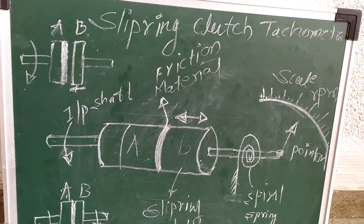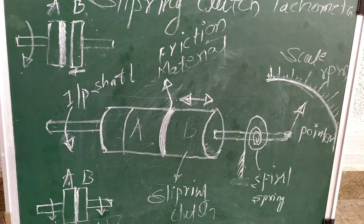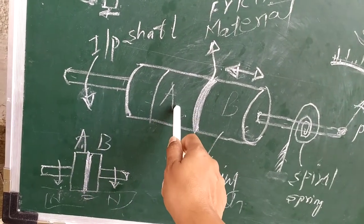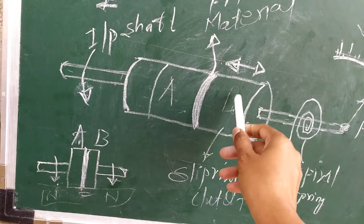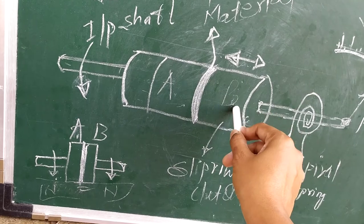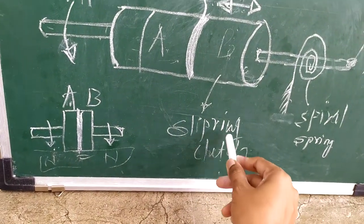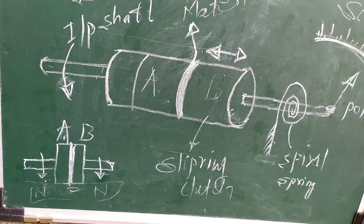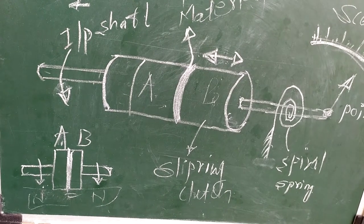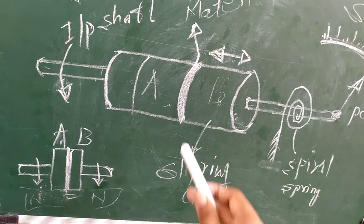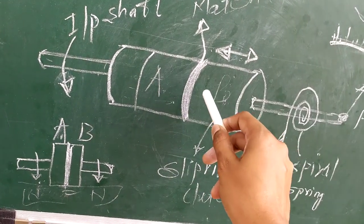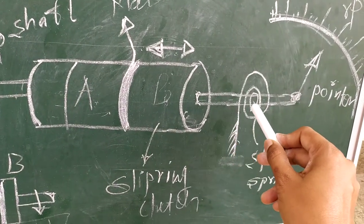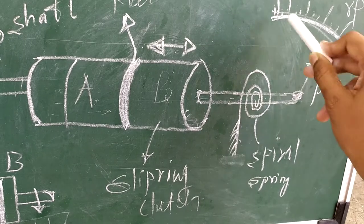I'll repeat once again the working. When the input shaft is rotating, link A is also rotating but B is at rest. We have to push this B link, or it is also known as the slip ring clutch, towards the left hand side. This friction material or friction surface will come in close contact, and due to that, B will rotate with the same speed as A.